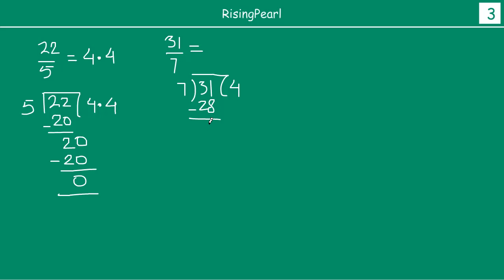31 minus 28 is 3. Now 3 is less than 7, so if you have a decimal point, you get a 0. Now 7 fours are 28 again. So 30 minus 28 is 2.